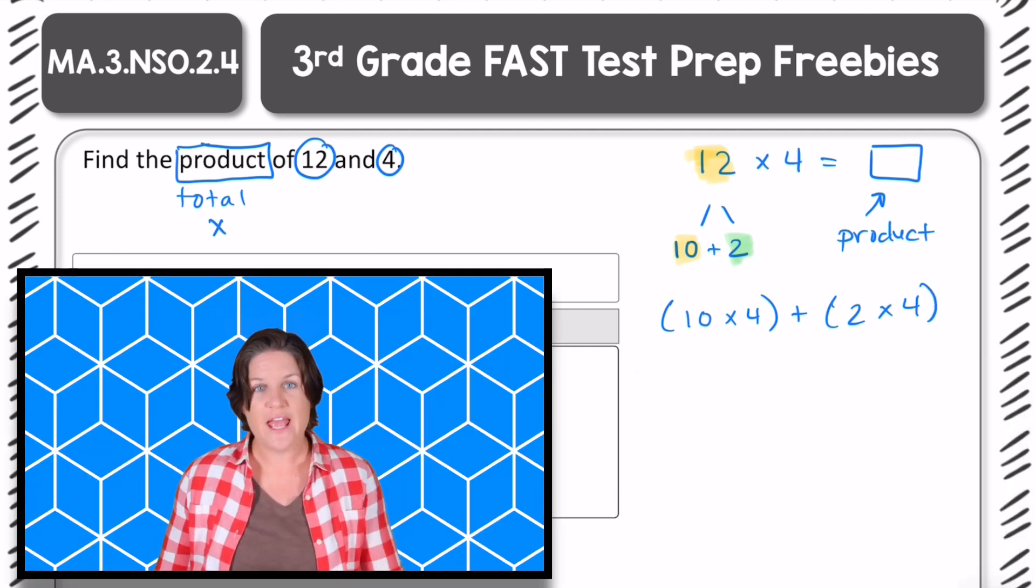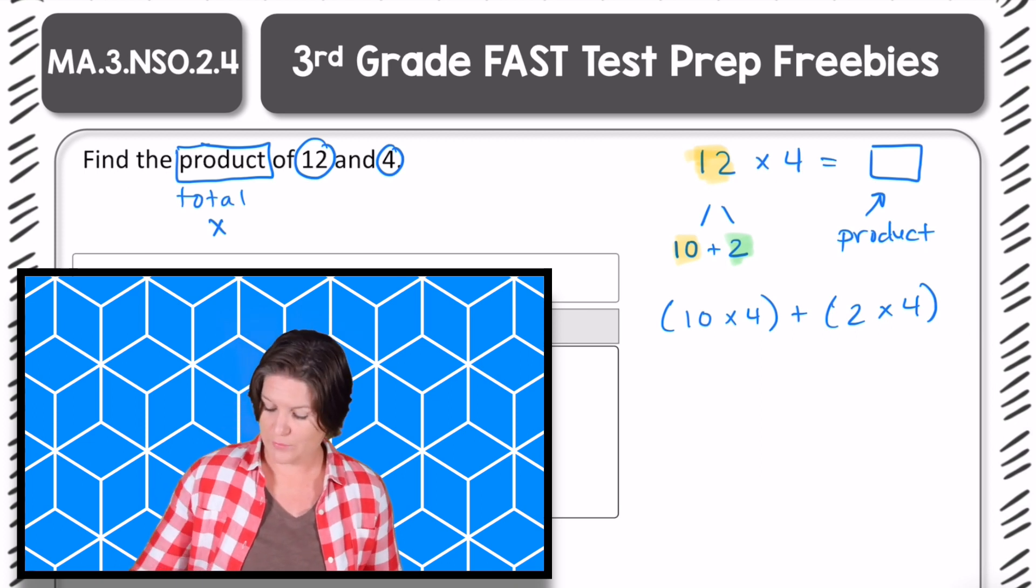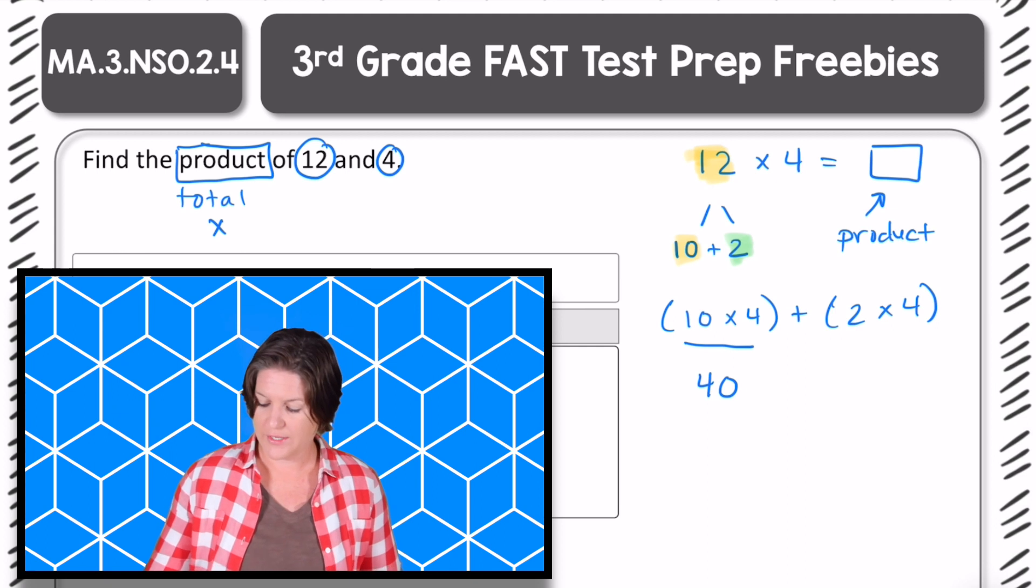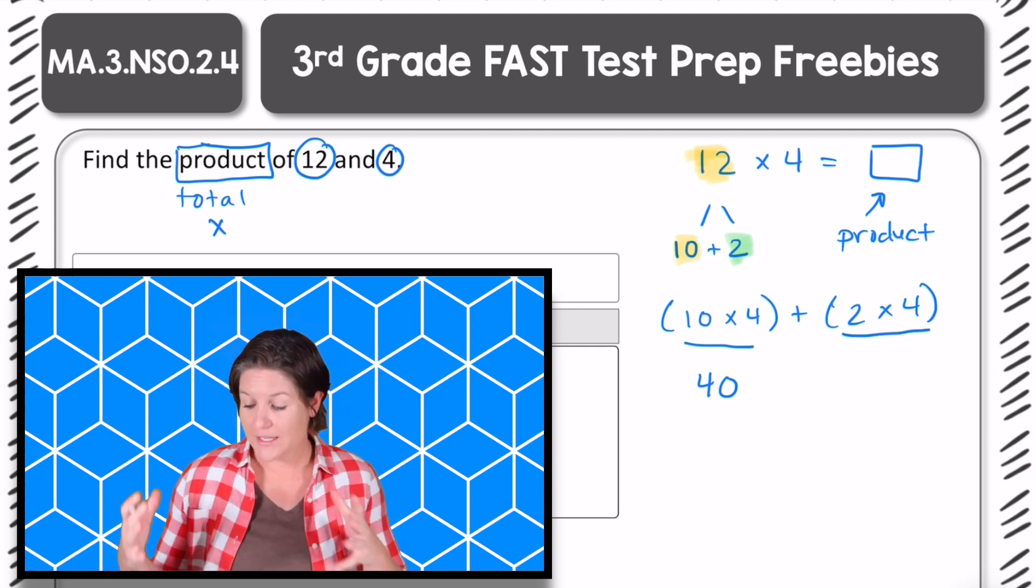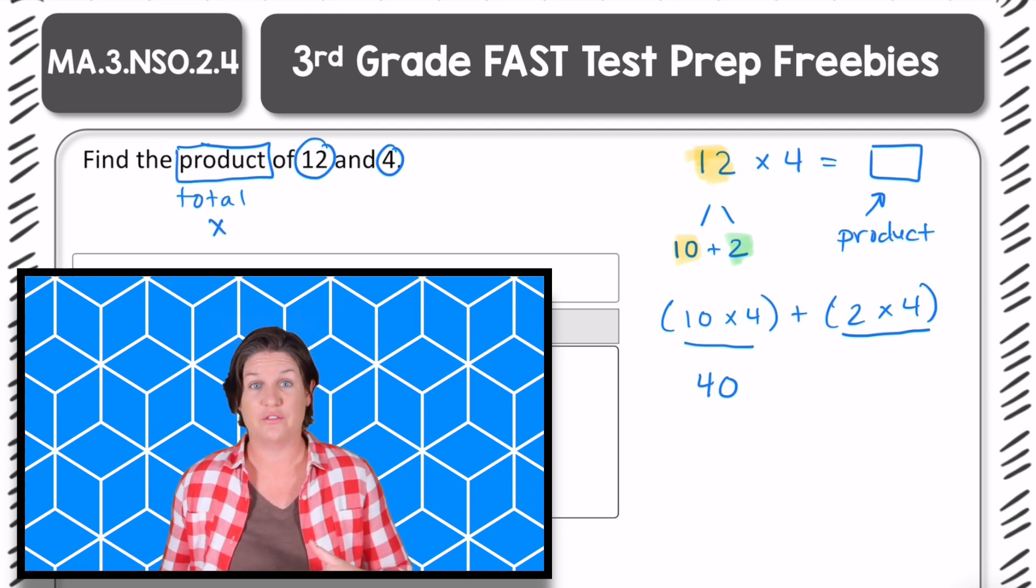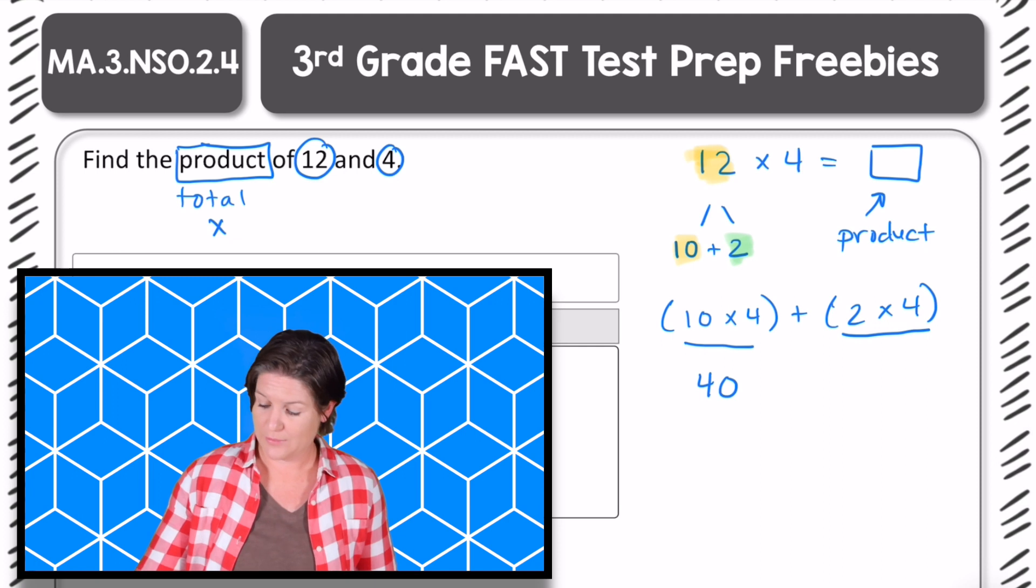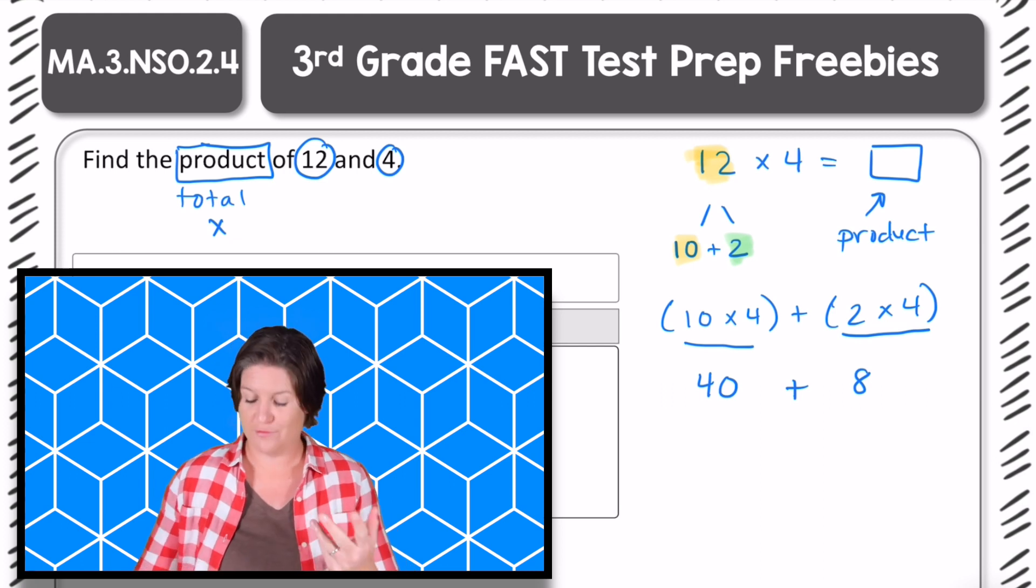Okay, so 10 times 4. What is 10 times 4? It's 40, right? So 10 times 4 can be solved as 40. And then 2 times 4, when we are multiplying by 2, we're just doubling the other factor. So 4 doubled would be 8, right? And now we add those two together. So 40 plus 8 equals 48.